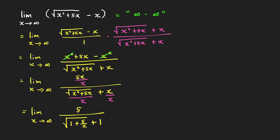As x goes to infinity, 5/x goes to 0, so the limit equals 5 over √1 + 1, which is 5 over 2.